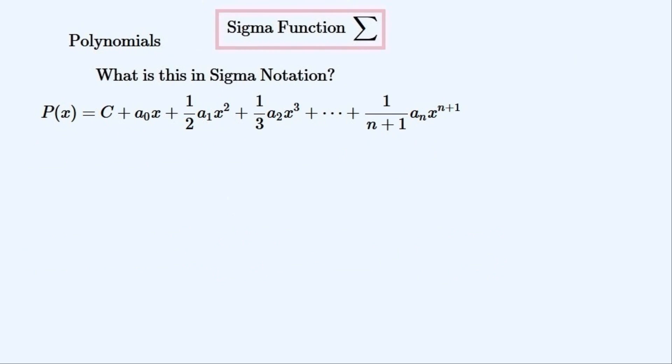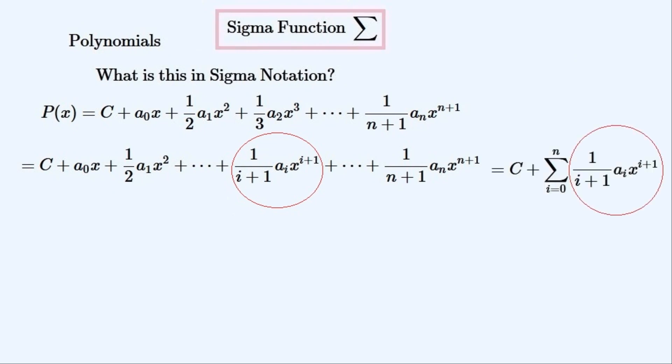And we have to find it in sigma notation. We find the ith term so that the coefficient a is subscripted with i. And so then we can use this ith term to pack up this polynomial into this sigma notation with the same upper and lower bounds as the coefficients have.